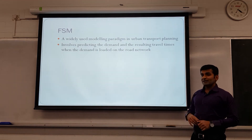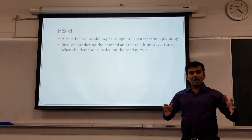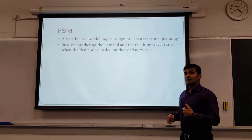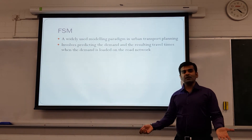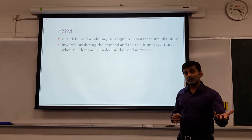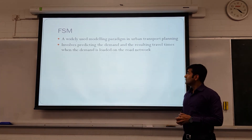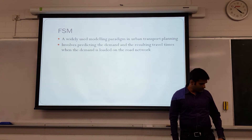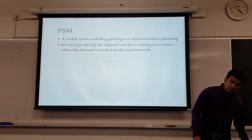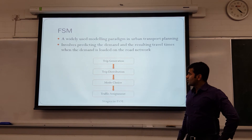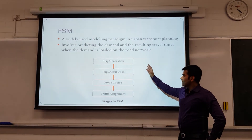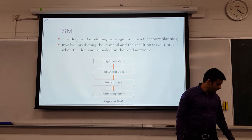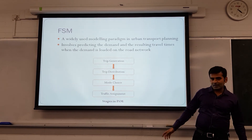The four-step model involves predicting the demand — that is, how many people are going to use a road network — and then the resulting travel times and congestion due to that demand. It comprises four steps: trip generation, trip distribution, mode choice, and traffic assignment. I will briefly go through each of these steps.